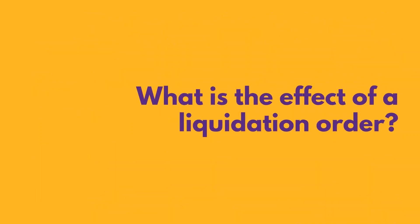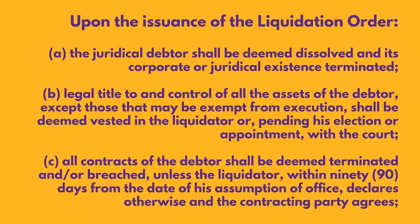What is the effect of a liquidation order? Upon the issuance of the liquidation order: first, the juridical debtor shall be deemed dissolved and its corporate or juridical existence terminated. Second, legal title to and control of all the assets of the debtor, except those that may be exempt from execution, shall be deemed vested in the liquidator or pending his election or appointment with the court. All contracts of the debtor shall be deemed terminated and/or breached unless the liquidator within 90 days from the date of his assumption of office declares otherwise and the contracting party agrees.